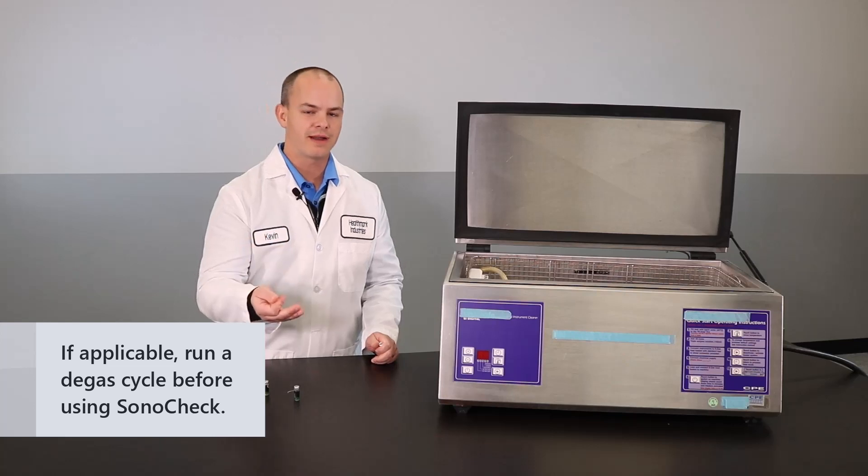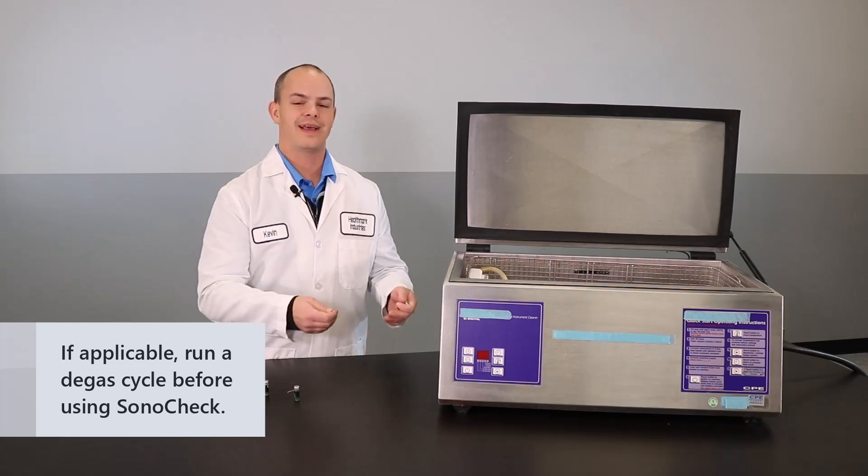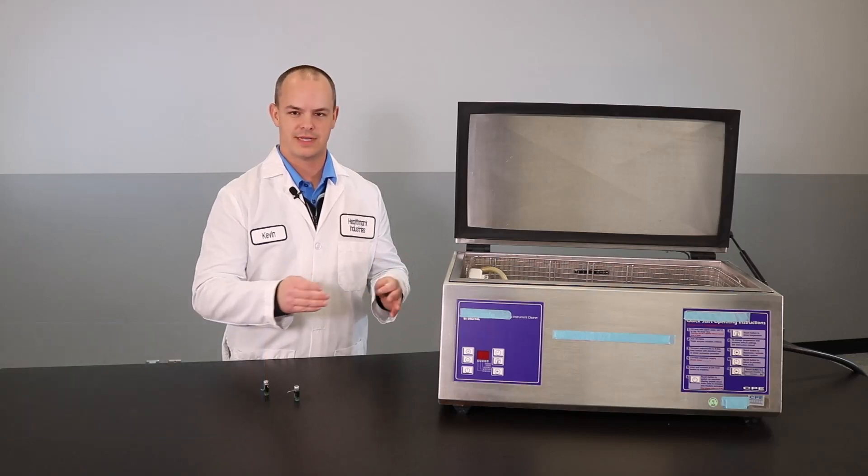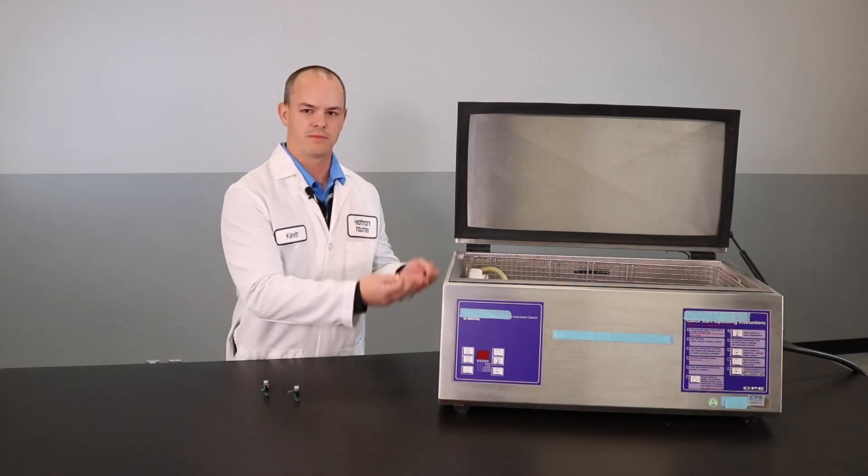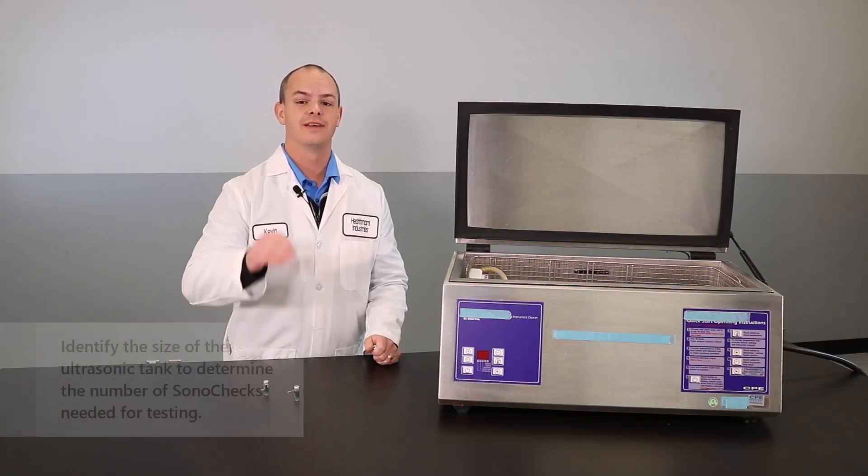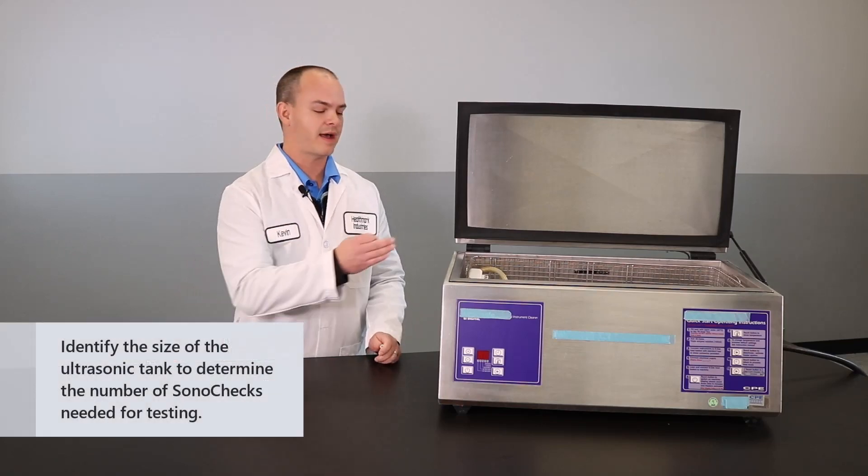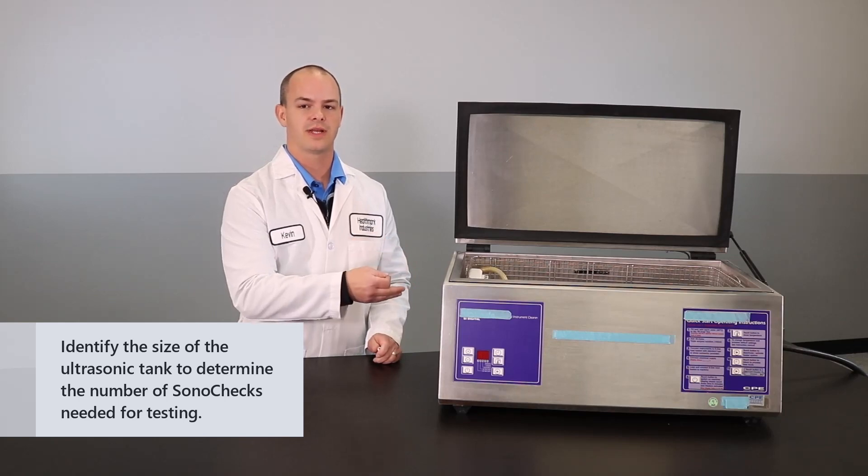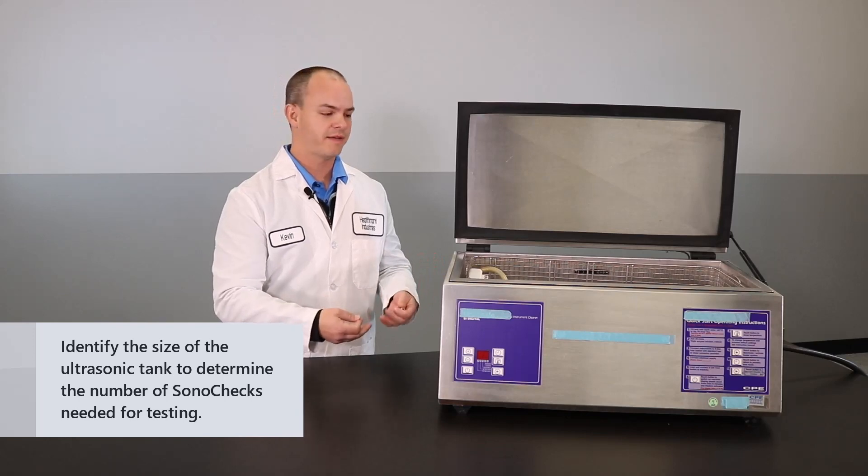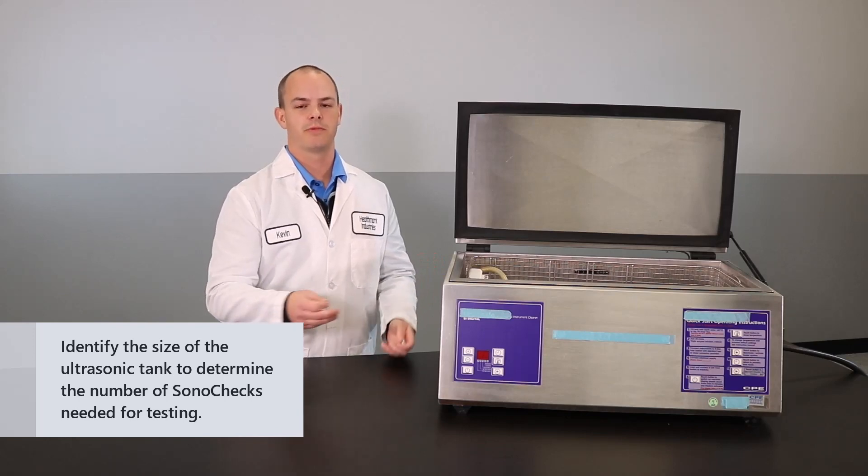If you have a newer model of ultrasonic cleaner that has that integrated degassing cycle in their regular test cycle, then you can get right to the next step, which is to check your IFU and identify how big of a tank your ultrasonic cleaner has. This one right here, according to our IFU for SonoCheck, is what we would call a large tank.